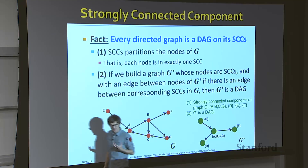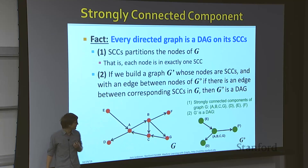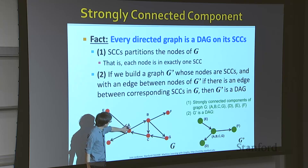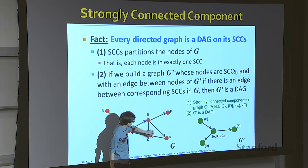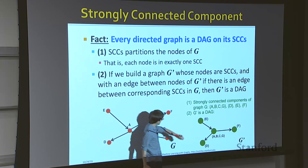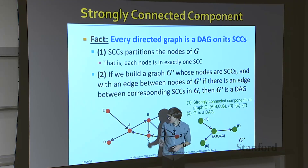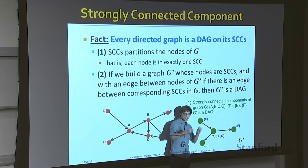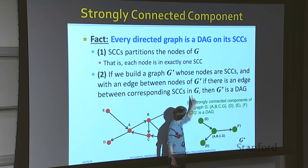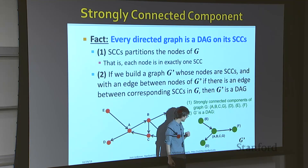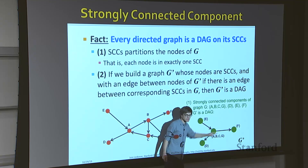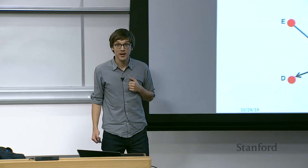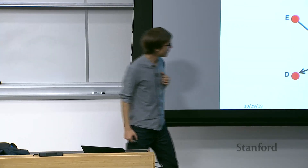Here's the illustration: the graph has SCCs labeled one, two, three, and four. There's an edge between SCC containing e and the middle blob of four nodes because e links to those nodes, and another from that blob to f. This resulting condensation graph is acyclic.